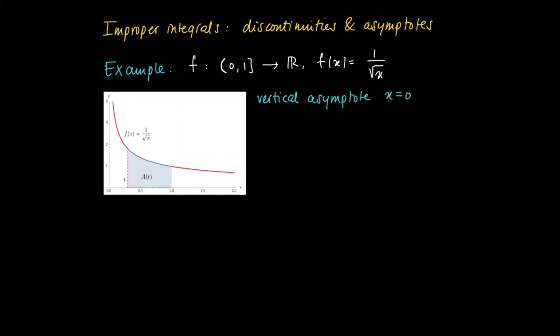And for t smaller than 0 and 1, we define a definite integral, A(t), which equals the integral from t to 1 of f(x) dx. So A(t) represents the gray area under the graph of f.